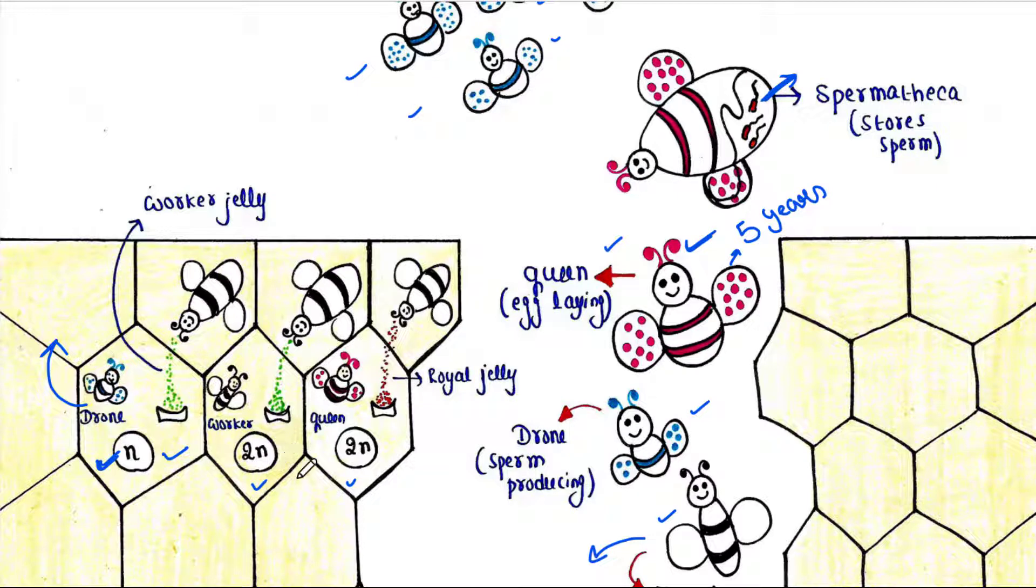If the egg is fertilized by the stored sperm, that means the egg is now diploid, so it hatches to generate a female honeybee. A female honeybee can either be a worker or a queen, depending on the diet it consumes.